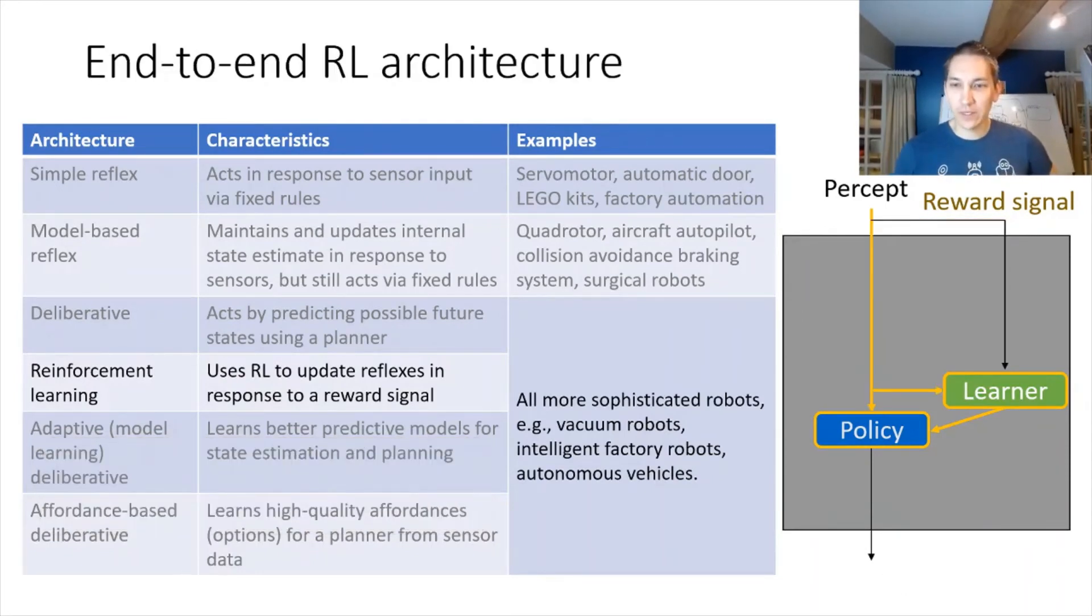Some extreme case of this is to do what's known as end-to-end reinforcement learning, where we get rid of any kind of perception component altogether, and we just directly input the percept inputs into the learning procedure. We'll talk a little bit about this at the end of the class.